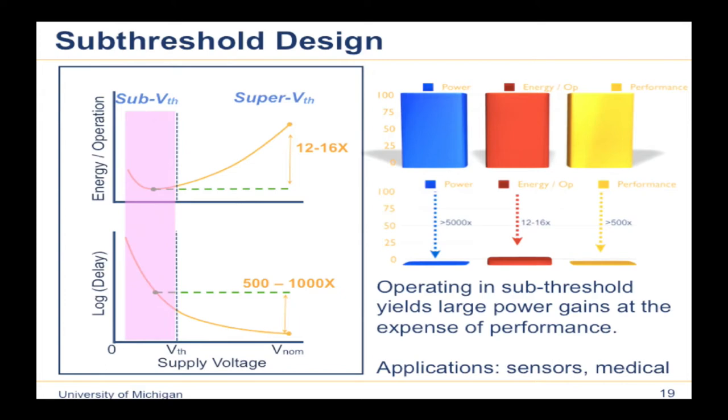Sub-threshold processing targets the energy minimum point. Studies, including work at Michigan, found that this saves about 12–16x in energy per operation, but is 500–1,000 times slower than traditional systems — giving huge power savings on the order of 5,000x. This is great for energy-harvesting sensors with very limited power budgets, but doesn't work well for applications ranging from mobile handhelds to supercomputers. We need something that gets some energy efficiency gains without such severe performance slowdown.